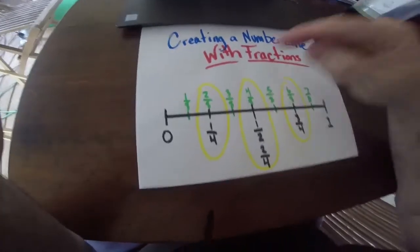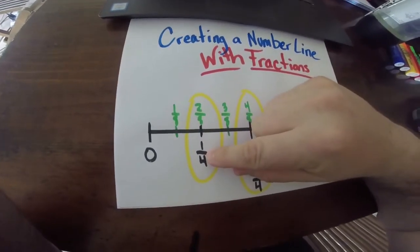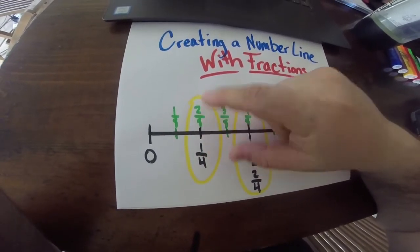Now look, you can see right here that the fractions that are above each other are equivalent. I circled them in yellow.